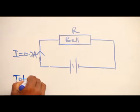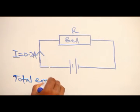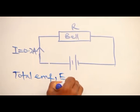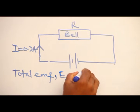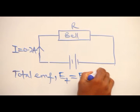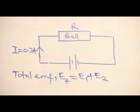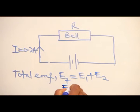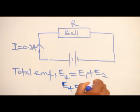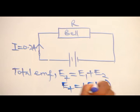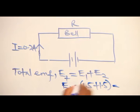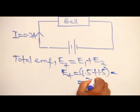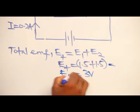Total EMF, E sub T, is EMF of the first cell plus the EMF of the second cell. There are two of them and they are in series. So the total EMF will give us 1.5 plus 1.5 volts. This will give 3 volts. That is the total EMF.